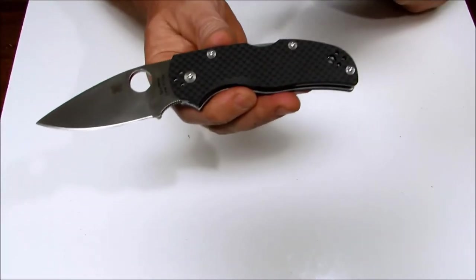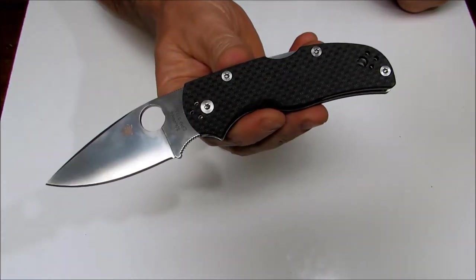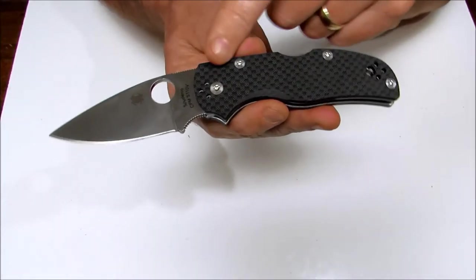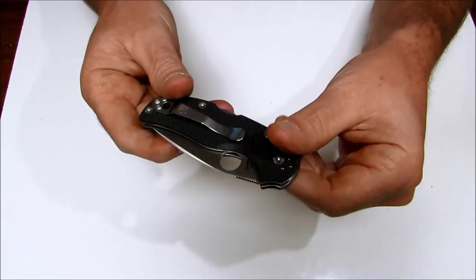The overall length on this is six and seven-eighths of an inch. Closed, it measures four inches. The blade length is three inches and it's a fully flat ground blade.